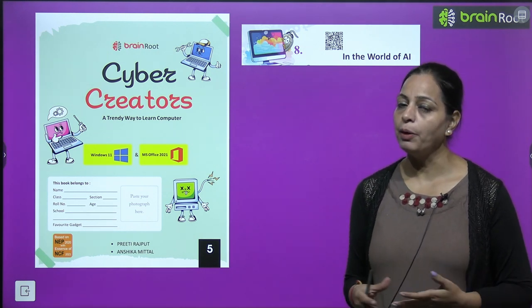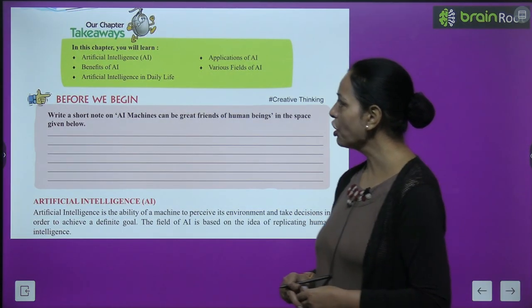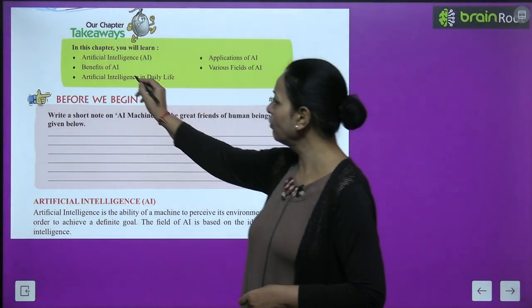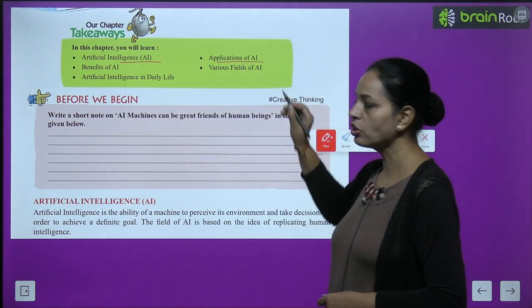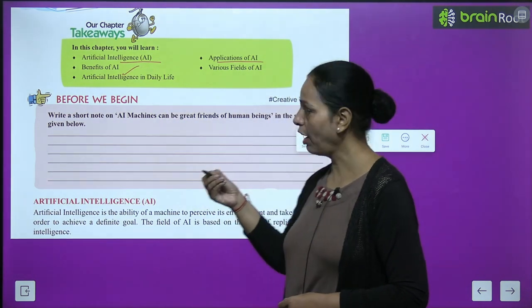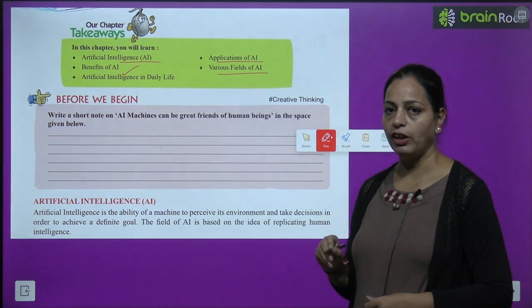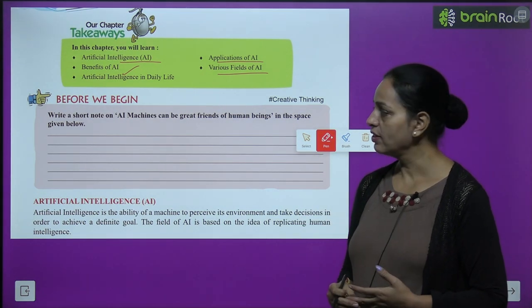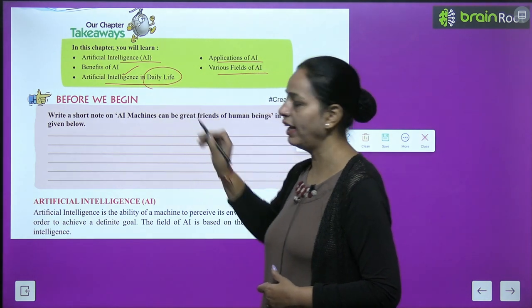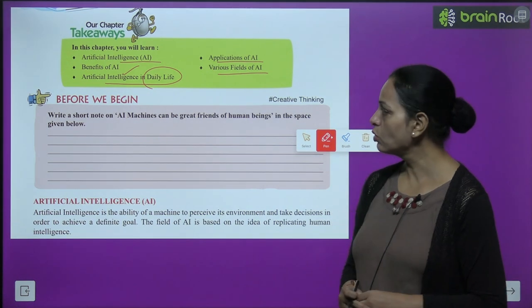That is very important in our life. In this chapter you will learn about AI means Artificial Intelligence, Applications of AI, Benefits of AI — kya benefits hain, kya applications hain — various fields of AI, uske koon koon se fields hain, and Artificial Intelligence in daily life — hum daily life mein kaise use kar rahe hai AI ko.